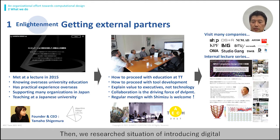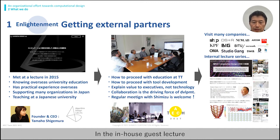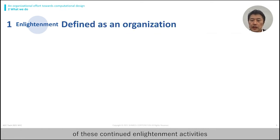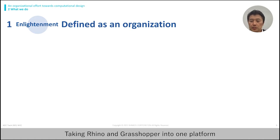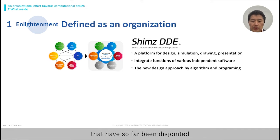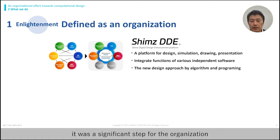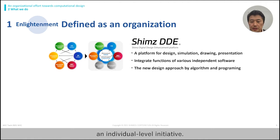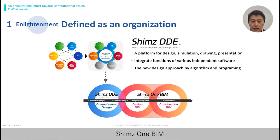We researched the situation of introducing digital tools in overseas organizations. We also held an in-house guest lecture series — Robert came to our Tokyo head office. As a result of these continued enlightenment activities, we were able to acquire recognition of computational design as an organization, taking Rhino and Grasshopper into one platform, which we named the Shimizu Digital Design Enhancement Platform. Our goal was to consolidate the study functions of design that had so far been disjointed and incorporate them into a new design process. While this might sound quite natural, it was a significant step for the organization to clearly define what was, until then, an individual-level initiative. And this led to an organization-wide effort: Shimizu OneBeam.